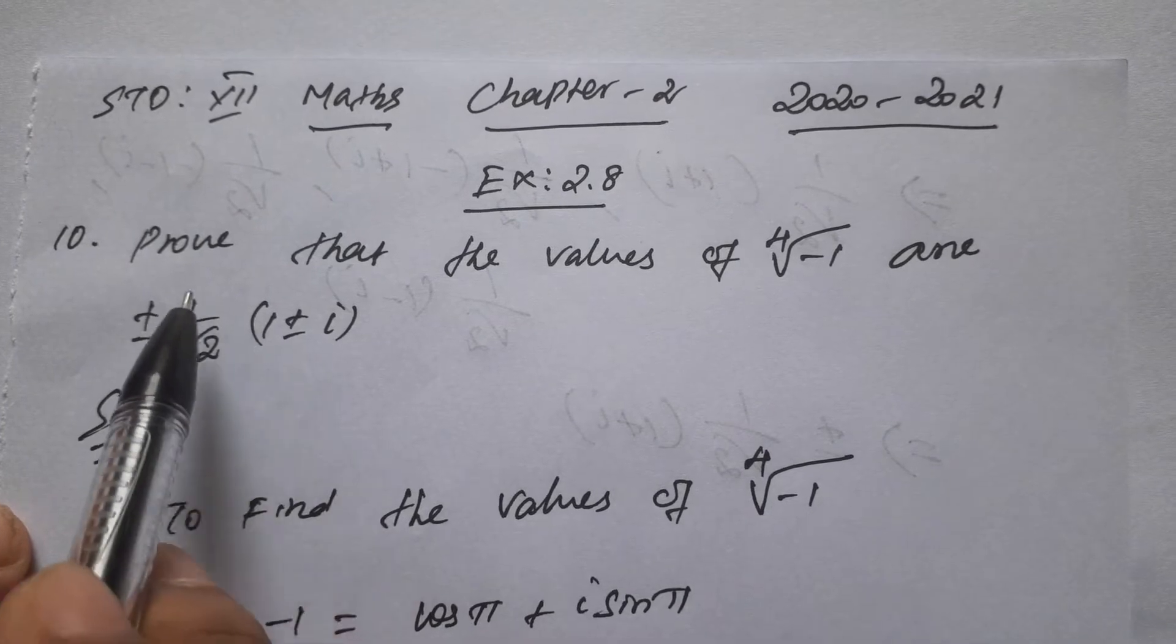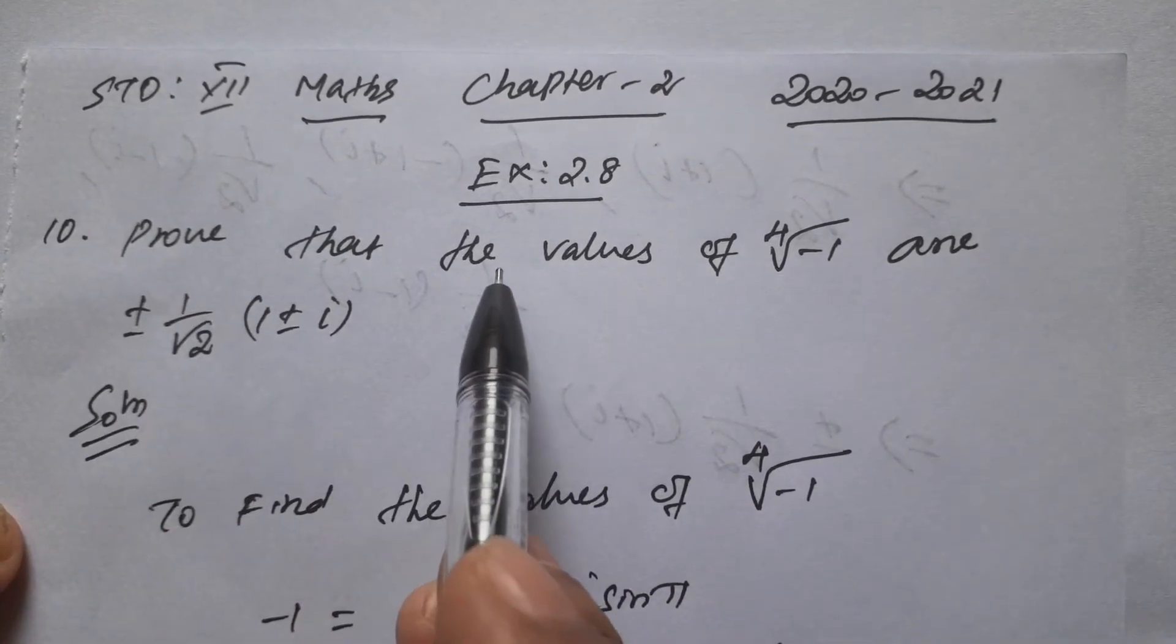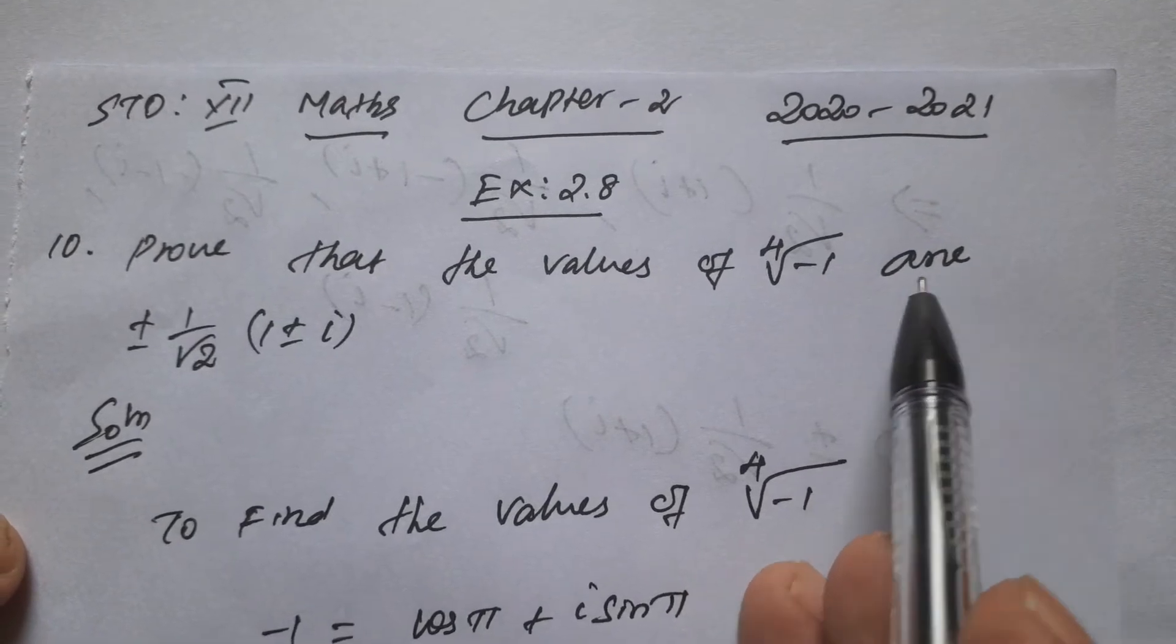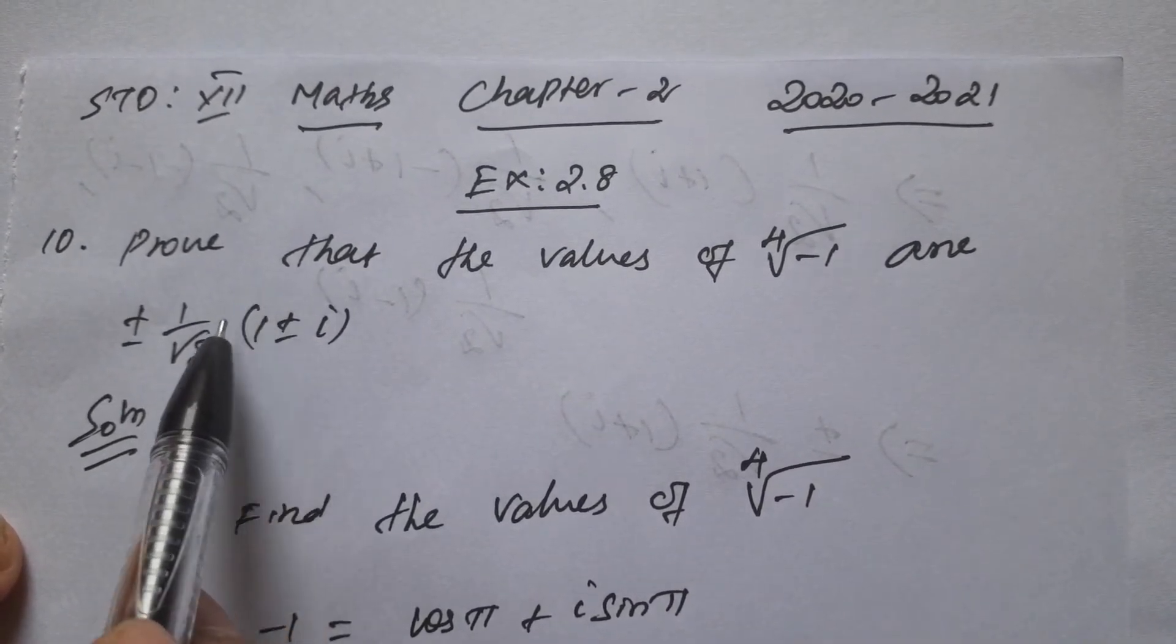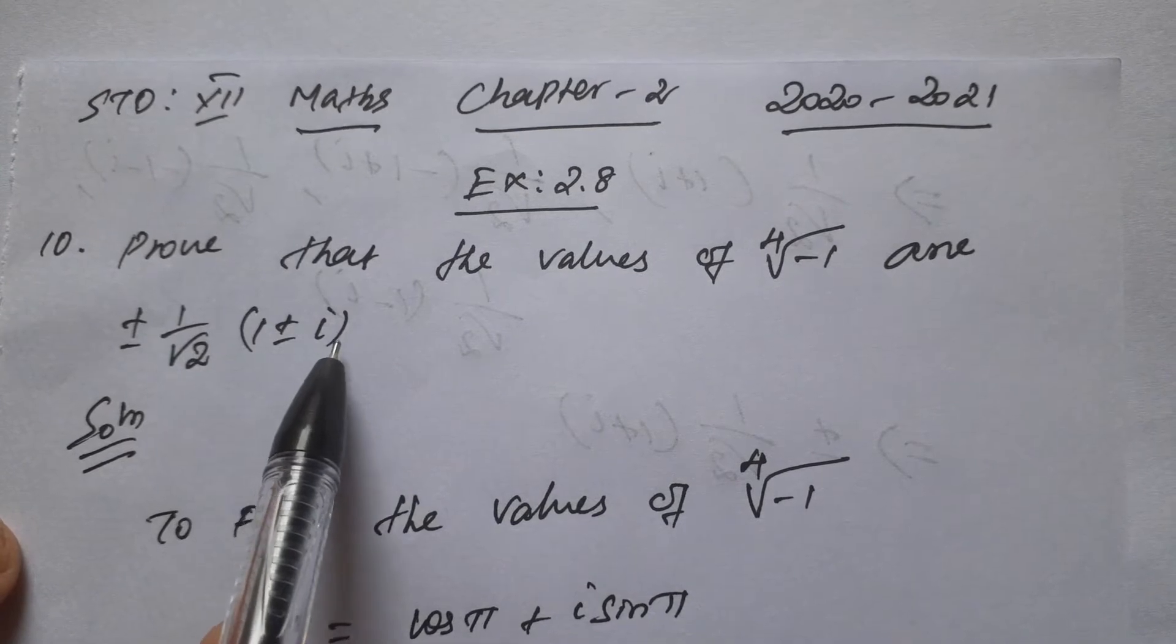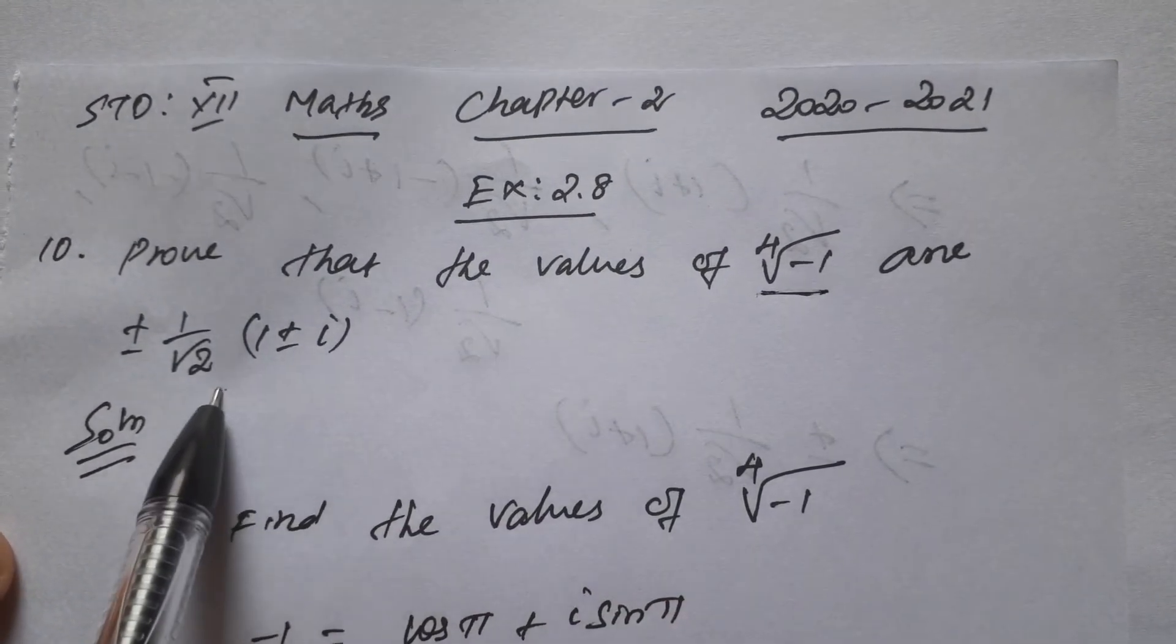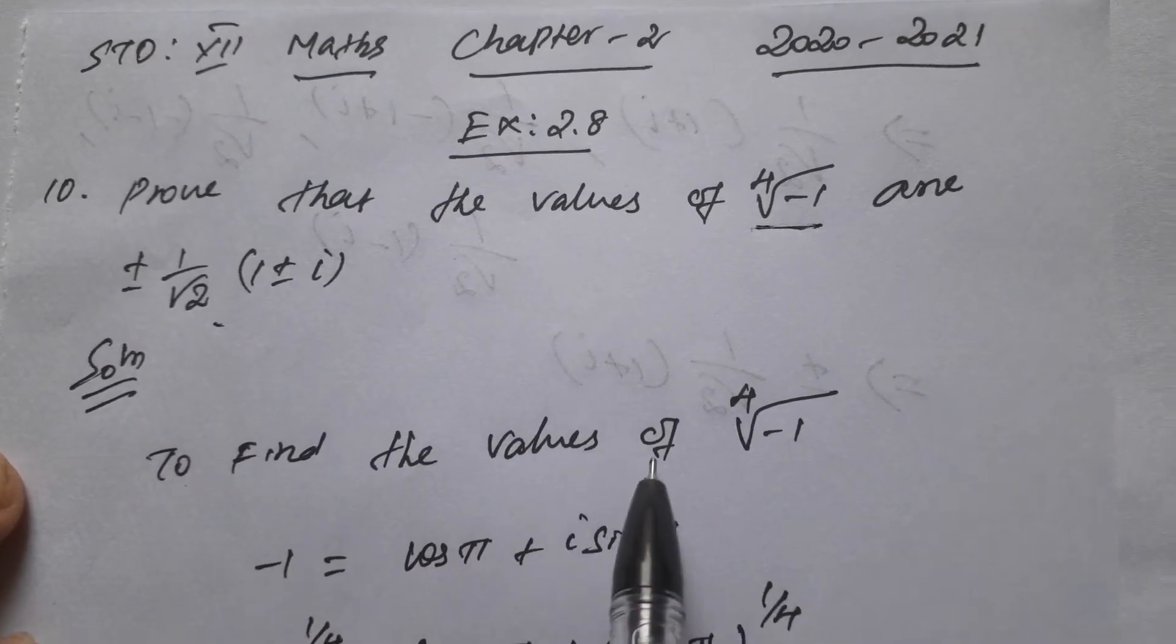Prove that the values of fourth root of minus 1 are plus or minus 1 by root 2 into 1 plus or minus i. This question is: if we can prove it, to find the value of fourth root of minus 1.